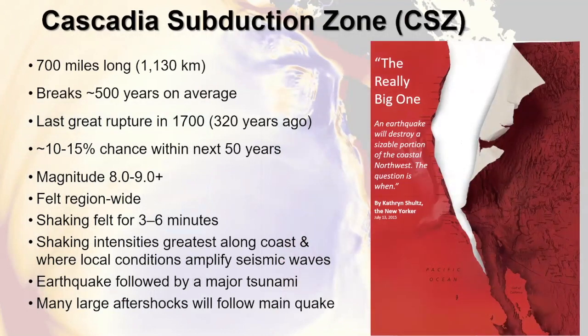The main earthquake talked about for tsunami hazards in Washington is the Cascadia subduction zone. It's about 700 miles long off the coast of Washington, Oregon, and California, going all the way up into Canada. It breaks about every 500 years on average, and the last great rupture was in 1700 — meaning there's about a 10 to 15 percent chance of one of these big earthquakes in the next 50 years. This earthquake will be felt region-wide and the shaking will last three to six minutes. It's very important to understand that in some locations on the shore, the wave will arrive within 15 minutes — that's only 10 minutes after the ground stops shaking.